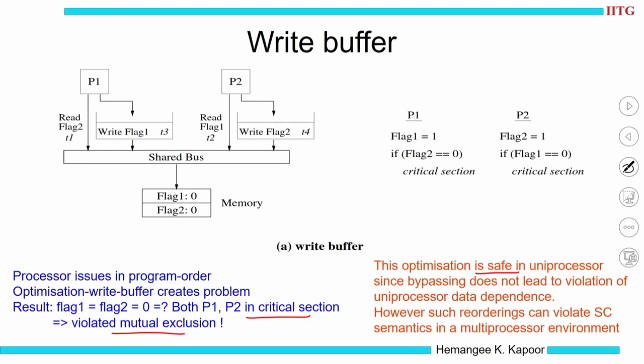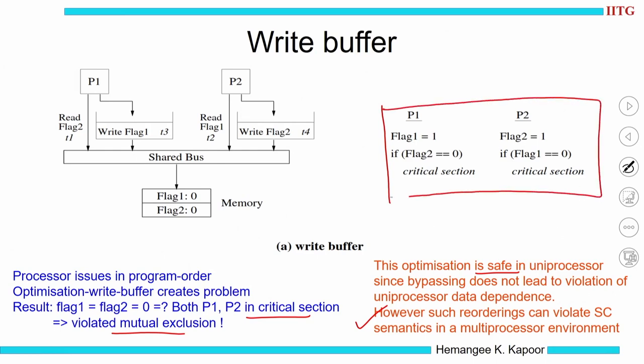This optimization is safe in a uniprocessor but in a sequential consistent multiprocessor system it is not. Such reorderings violate the sequential consistency requirement in a multiprocessor environment. Even if you wrote the program correctly, this particular architecture is not executing it in the desired manner — both processes entered the critical section, violating mutual exclusion.